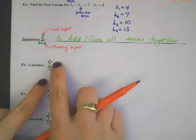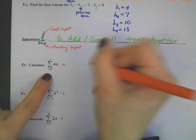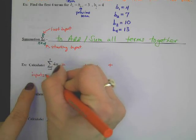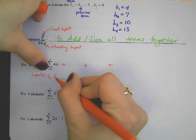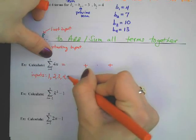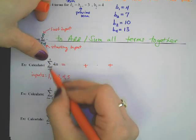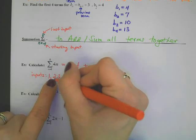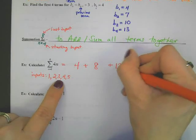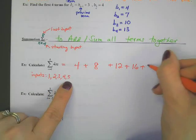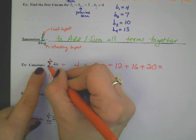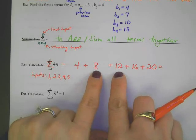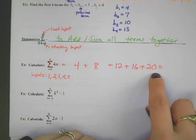Here are some examples. Sigma means to add, so I'm going to add a bunch of things together. The starting input is 1, so our inputs are 1, 2, 3, 4, 5. It's very important to look at the starting and ending numbers for your inputs. Plug in 1: 4 times 1 is 4. Plus plug in 2: 4 times 2 is 8. Plug in 3: 12. Plug in 4: 16. Plug in 5: 20. The answer isn't finished until you sum them — add them all up.